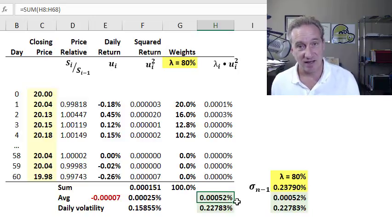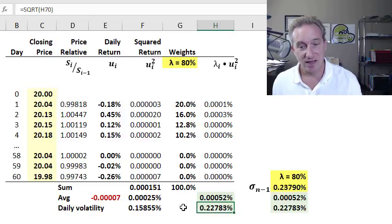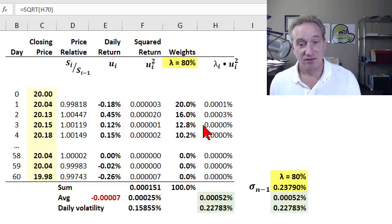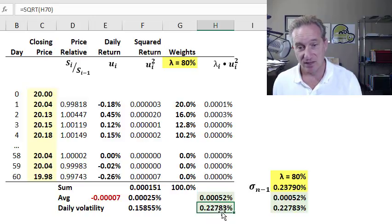But it is a valid estimate of the daily variance, such that if we take the square root, we get an estimate of the current volatility under this approach, and you can see that it is higher. So that captures the key difference. The fact that we now give more recent returns greater weight and more distant returns lower weight to affect a different estimate in our daily volatility.